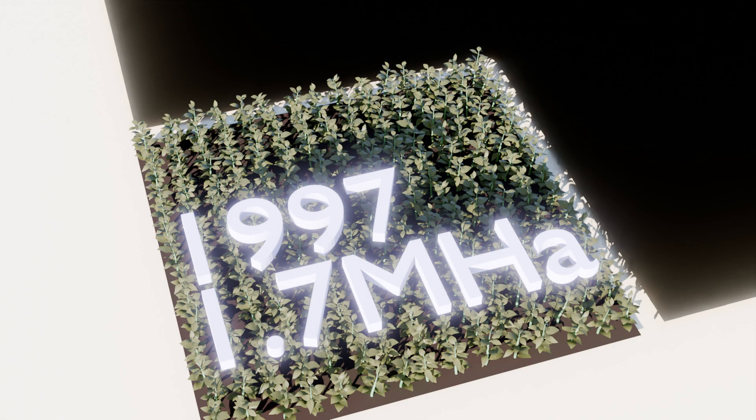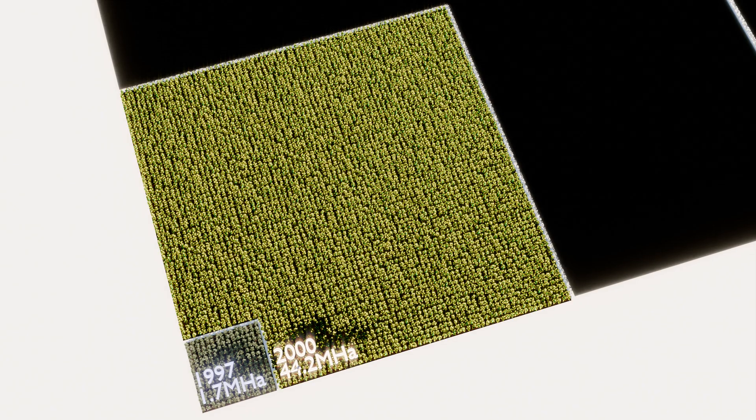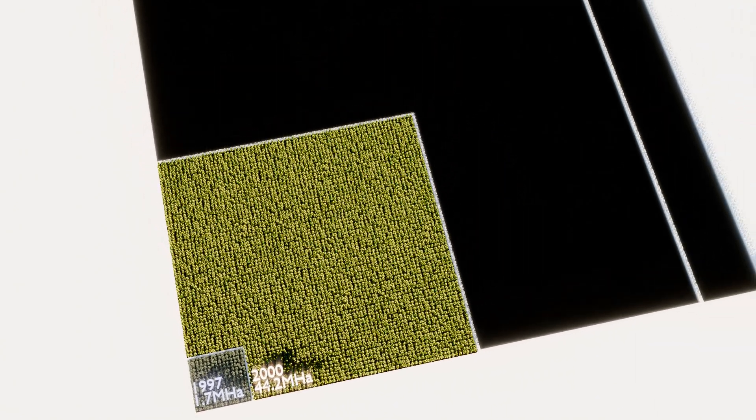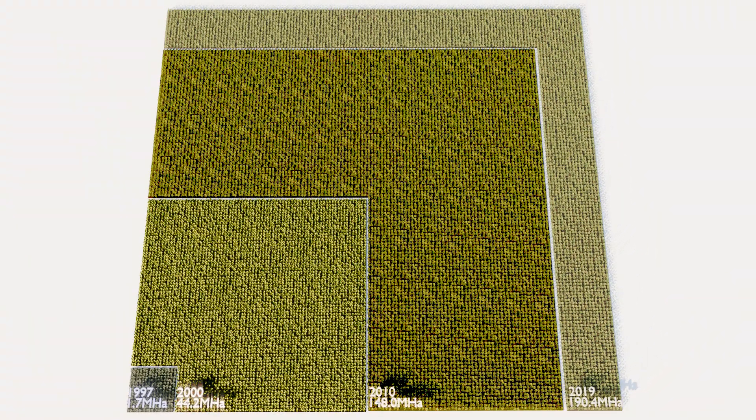In 1997, we find ourselves at the genesis of GM crops for commercial use. That year, 1.7 million hectares of them were grown globally. By the turn of the millennium, that number had risen to 44.2 million hectares, 148 by 2010, and 190.4 by 2019.